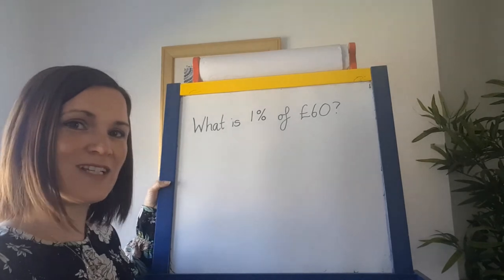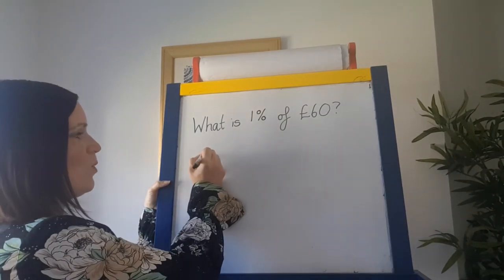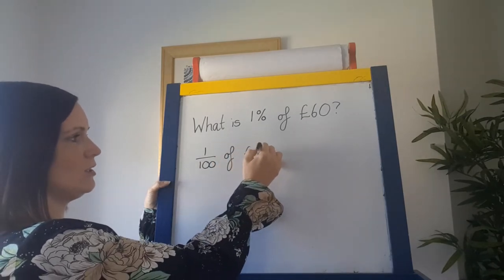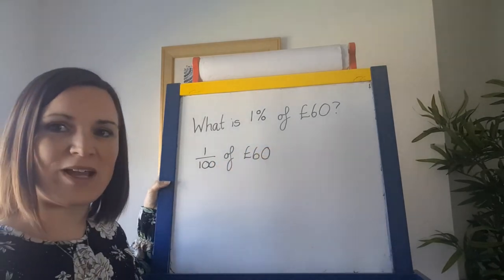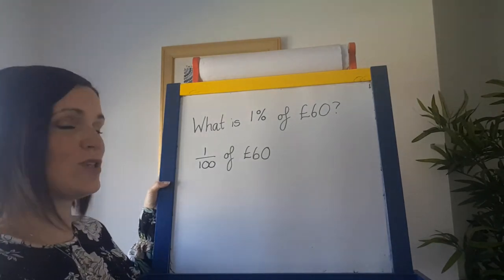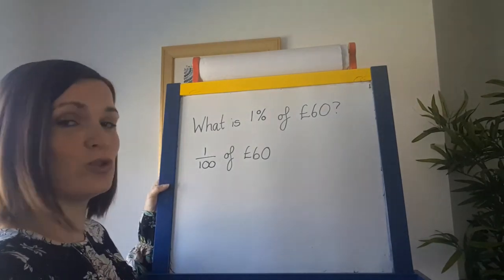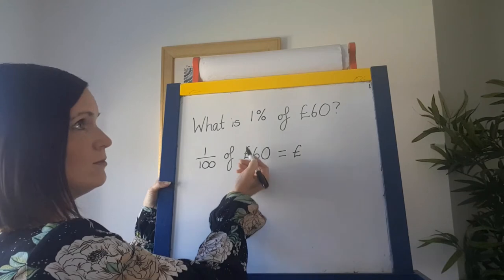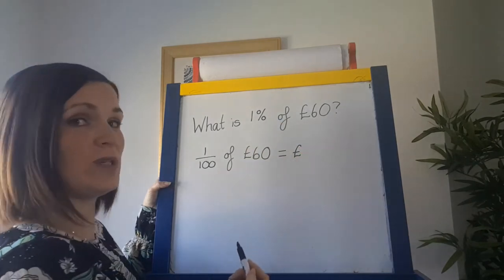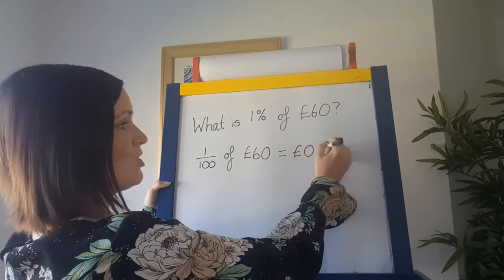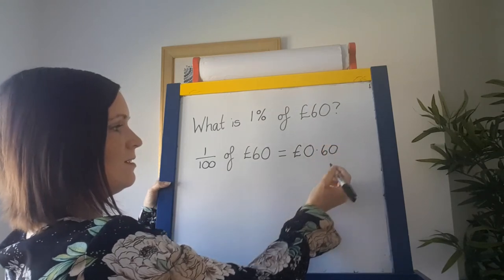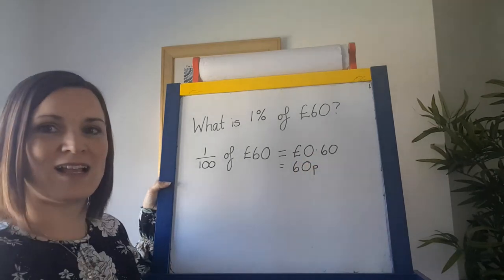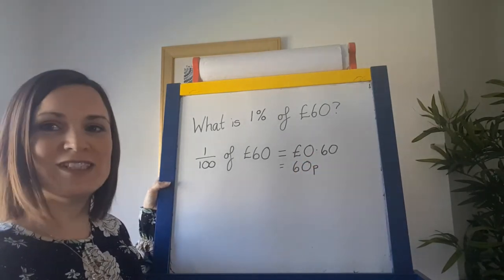What is 1% of £60? Well, 1% is 1 over 100, so one hundredth of £60 — you have to divide that by 100. Going back to our place value knowledge, when we divide by 100, everything moves down two place values. So the 6, which is in the tens place, gives us £0.60, or you could write it as 60p.